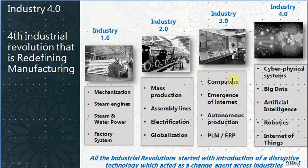Industry 3.0 brought computer emergence, the internet, autonomous production, ERP, and many software systems. Computer was the big development during Industry 3.0 and we started globalization and computerization across the world and across industry. Now the time has come for the cyber-physical system — that is called Industry 4.0, the era we are living in — with big data, artificial intelligence, robotics, and Internet of Things.